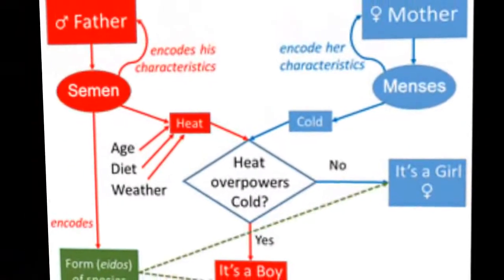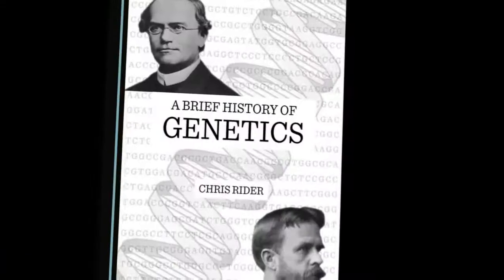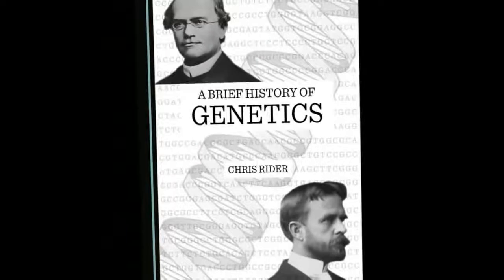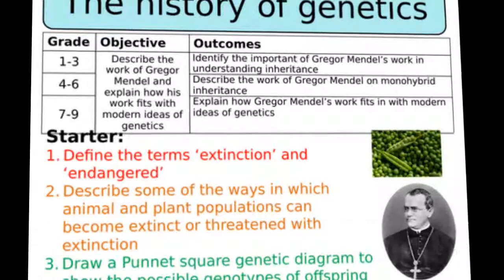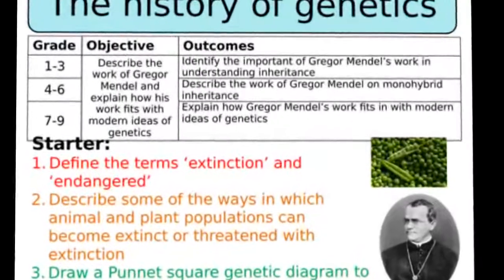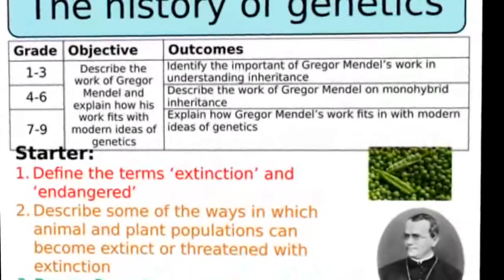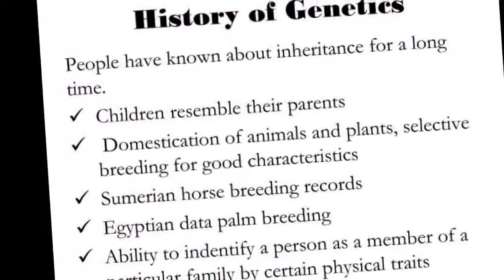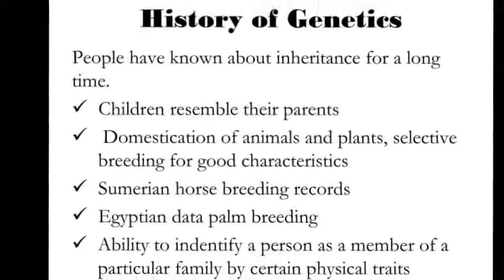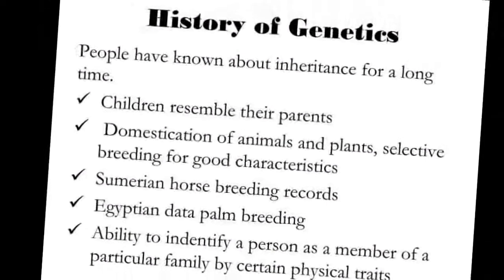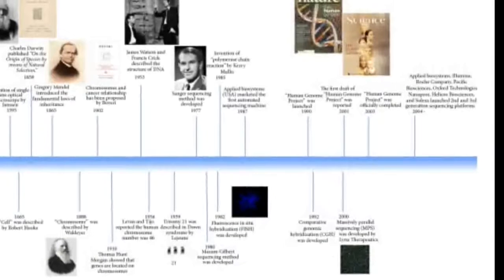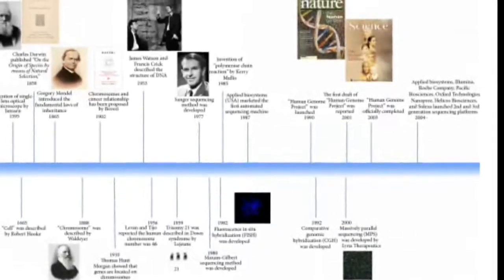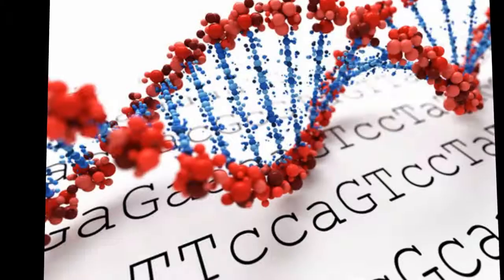In 1883, August Weismann conducted experiments involving breeding mice whose tails had been surgically removed. His results — that surgically removing a mouse's tail had no effect on the tail of its offspring — challenged the theories of Pangenesis and Lamarckism, which held that changes to an organism during its lifetime could be inherited by its descendants. Weismann proposed the germ plasm theory of inheritance, which held that hereditary information was carried only in sperm and egg cells.